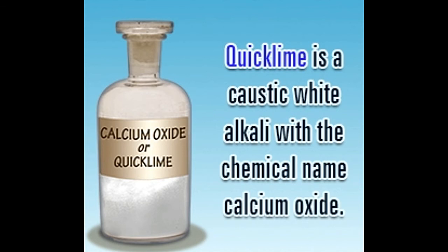The production of quicklime is one of the oldest chemical processes developed by mankind. But there is often a lot of confusion between terms like lime and quicklime. Bustle gives you a lot of information about quicklime and explains how it is industrially made.